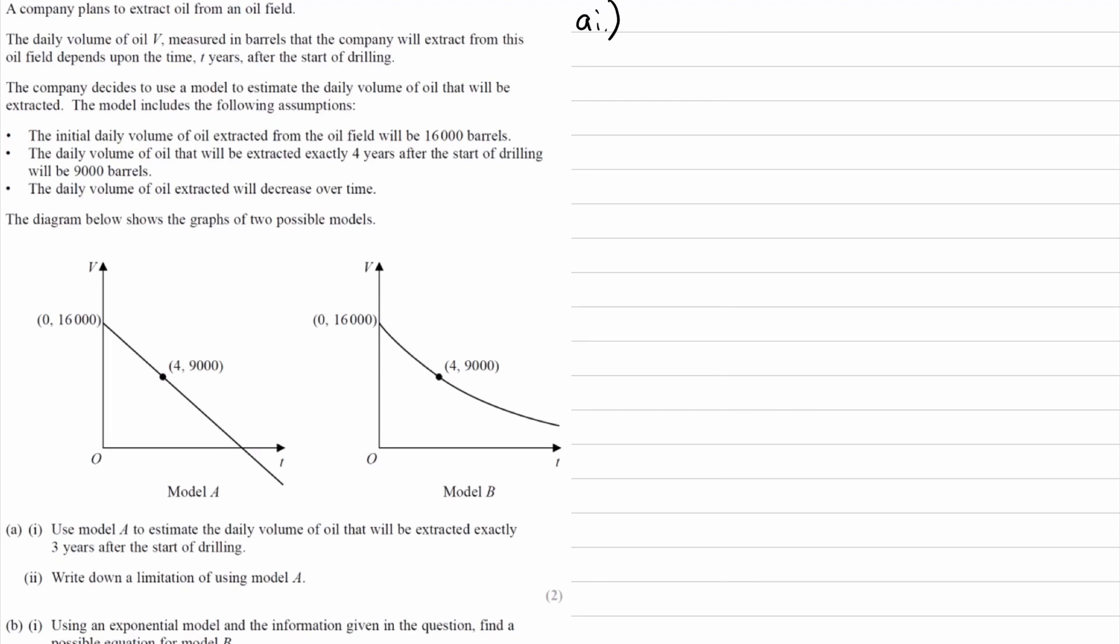For A part one, let's read through what we're given. A company plans to extract oil from an oil field. The daily volume of oil, measured in barrels V, that the company will extract depends upon the time t years after the start of drilling. The company decides to use a model to estimate the daily volume of oil that will be extracted.